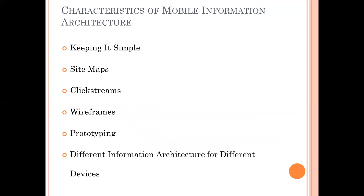The characteristics of Mobile Information Architecture include: keeping it simple, sitemaps, clickstreams, wireframes, prototyping, and different information architecture for different devices.